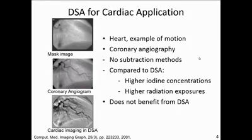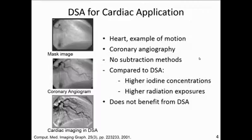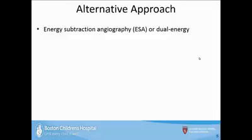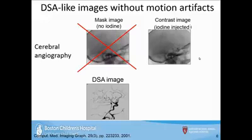When mask and contrast images are subtracted, even with motion correction, cardiac imaging does not benefit from DSA. Motion artifacts compromise image quality. So we have this gold standard in vascular imaging that we can't use to image a critical structure. An alternative approach is known as dual energy, or as I've been calling it throughout my career, energy subtraction angiography — ESA — which aims to eliminate the need for a mask image.